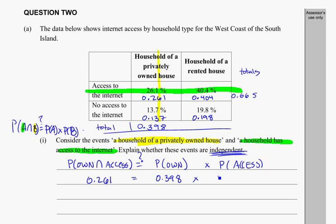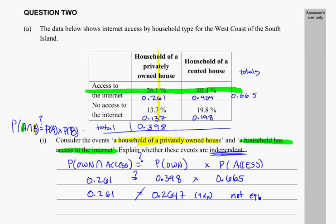When testing independence, we need to see whether 0.261 equals the probability of privately owning a house times the probability of having internet access. Multiplying those two numbers together gives 0.2647 to 4 decimal places. Comparing that to 0.261, these are not the same — they're not equal — therefore the events are not independent.